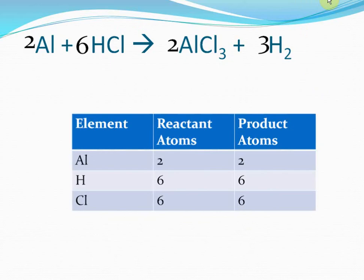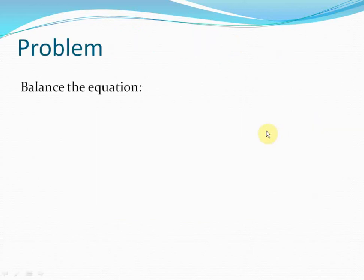In general, don't be worried when asked to balance any reaction. Simply note which element has the maximum number of atoms, then try to balance the number of atoms of that element on both sides by multiplying one of the terms. Then balance the other elements one by one. Let's solve yet another problem to further understand how we balance equations.